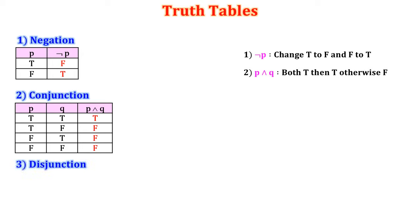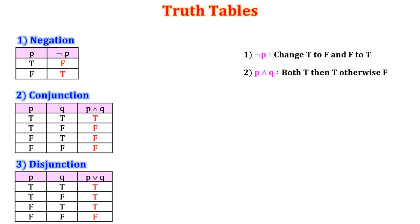3. Disjunction. There are two statements P and Q, so we have four possibilities. The disjunction is denoted as P OR Q. Here the condition is: if both are false then the answer is false, otherwise true.